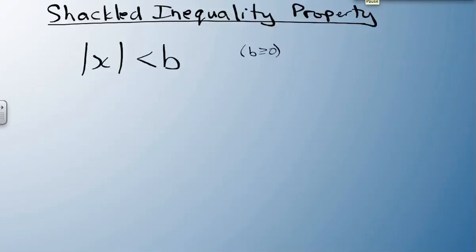Going a little further in, we've got the shackled inequality property. This is the absolute value of x is less than b. Now b has to be greater than or equal to 0, it can't be a negative number. We can actually rewrite this as x is going to be between negative b and b. That's the shackled, because it is in between those two parts that x is tied in the middle.